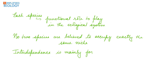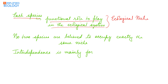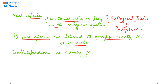Each species growing in a habitat has some role or function to play in that habitat. The functional role of a species in its ecological system is referred to as its ecological niche — or you can say it is the profession of the species in the habitat. No two species are believed to occupy exactly the same niche in an ecosystem. The interdependence between species is mainly for food, space, reproduction, and protection.